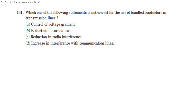Question 1: The following statement is NOT correct for the use of bundled conductors in transmission lines. Options: Control of Voltage Ratio, Reduction in Corona Loss, Reduction in Radio Interference, Increase in Interference with Communication Lines. The answer is option D — Increase in Interference with Communication Lines — which is NOT correct.